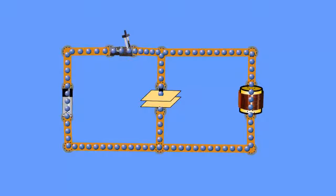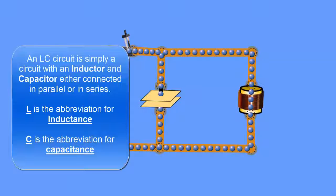Let's look at an LC circuit. LC is just a fancy name for inductive and capacitance. L is our abbreviation for inductance and C is our abbreviation for capacitance.